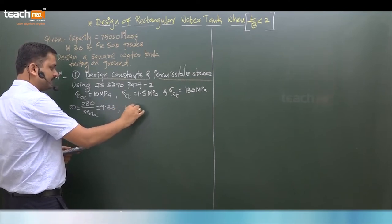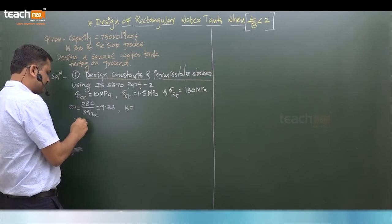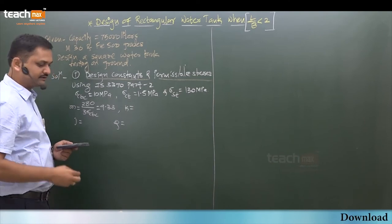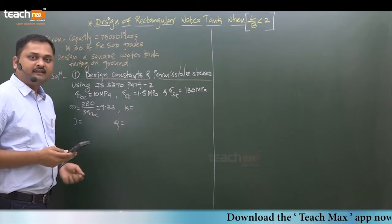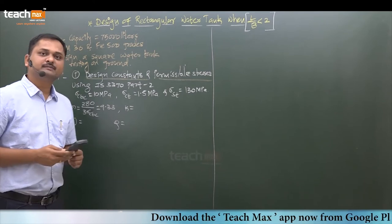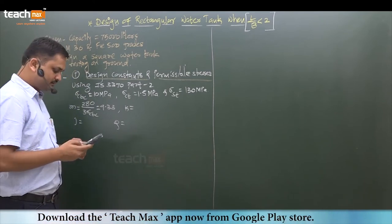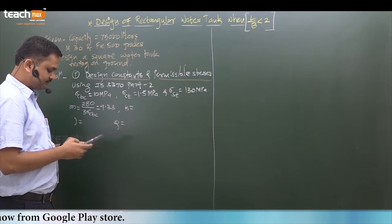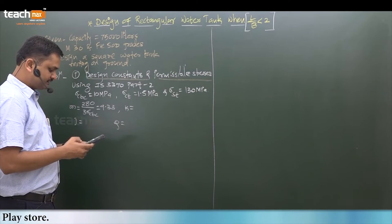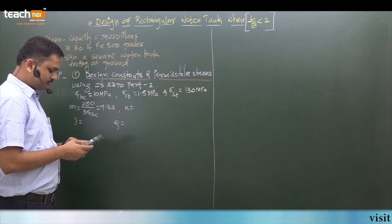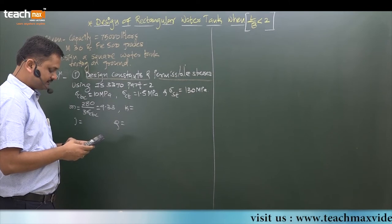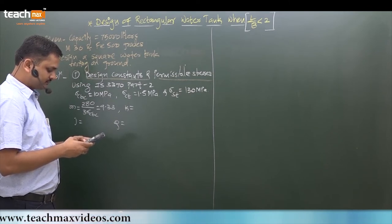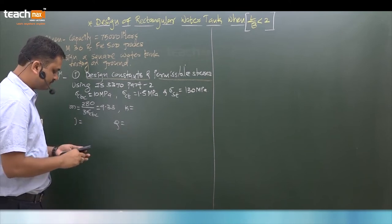Now you will get K, then J, then Q. These three we have to calculate. I am calculating directly. What is K? M Sigma CBC upon (M Sigma CBC plus Sigma ST). Put the value: 9.33 into 10 divided by (9.33 into 10 plus 130). The answer is 0.417, you can say 0.42.